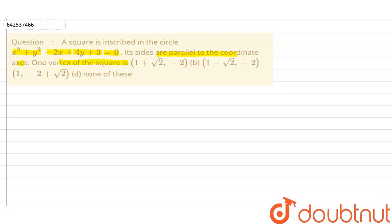One vertex of the square is: option A saying (1 + √2, -2), option B saying (1 - √2, -2), option C saying (1, -2 + √2), and option D saying none of these.